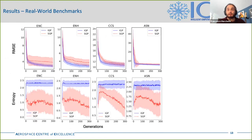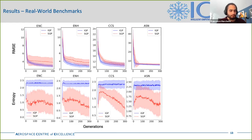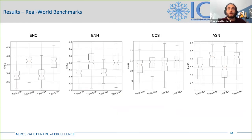The same trend is observable on the real-world benchmarks, both from the fitness and entropy perspectives. You can see that the IGP converges to lower values and that the entropy is maintained approximately constant at a high value throughout the evolutionary process. And again, when testing the best individuals on training and test data, IGP performs better than the SGP.